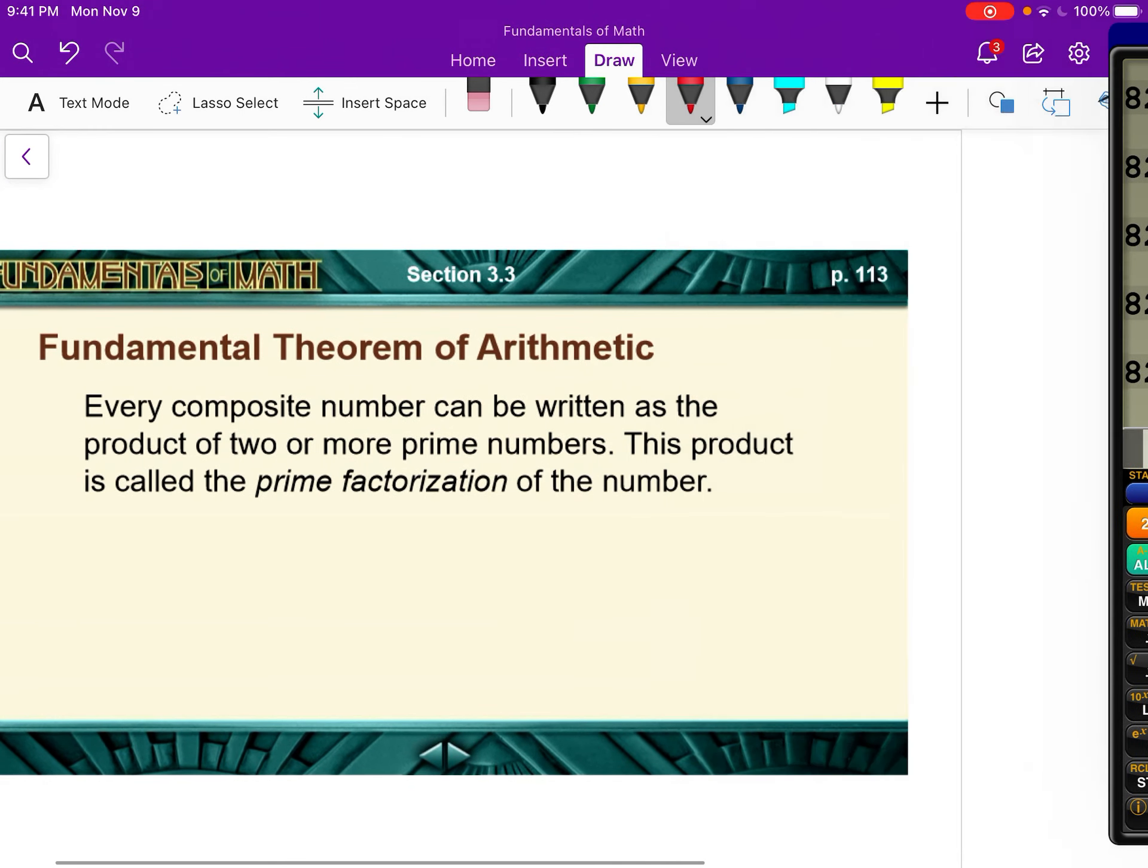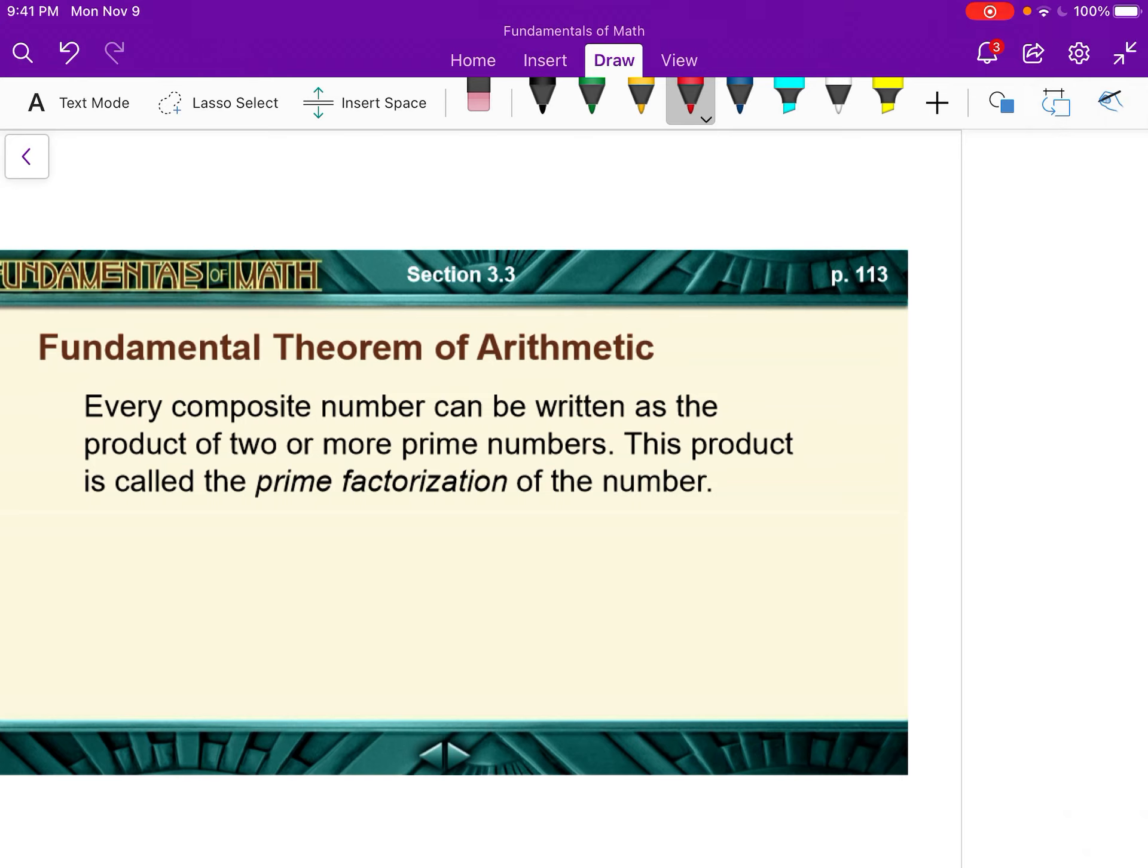And here is an important... It's called the Fundamental Theorem of Arithmetic. Well, it's the Fundamental Theorem, so it's very important. Every composite number, so natural numbers that aren't prime, can be written as the product of two or more prime numbers. And this product is called the prime factorization of the number.